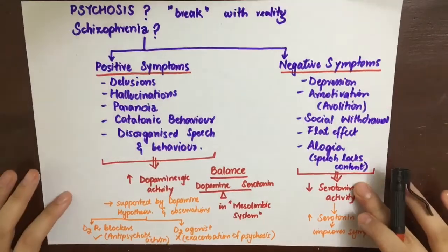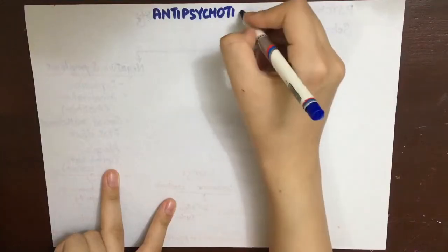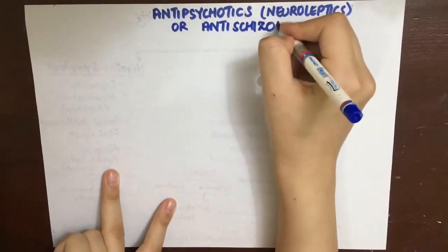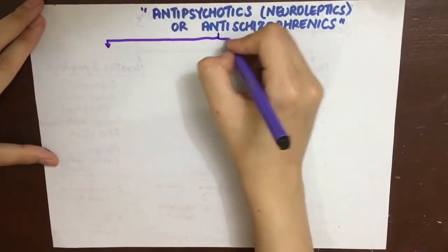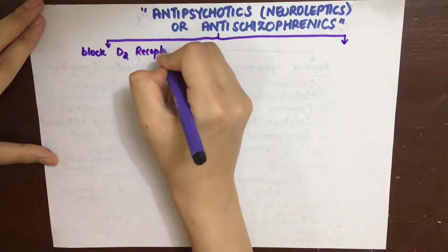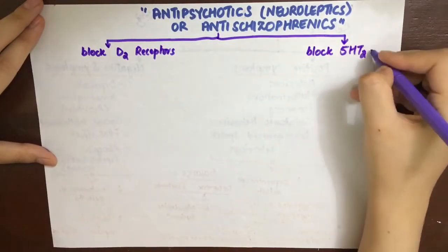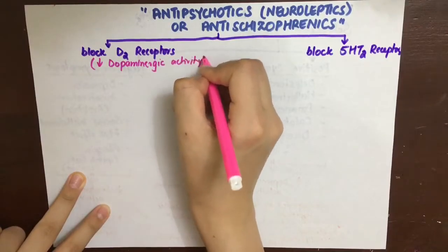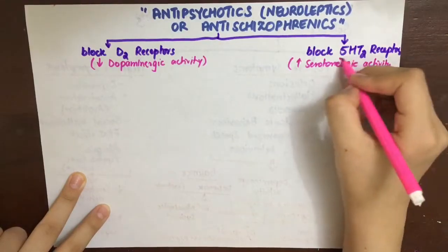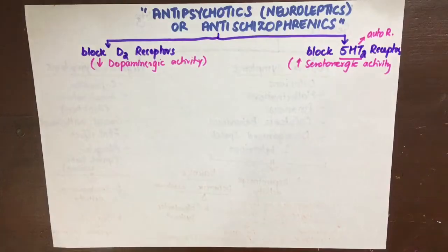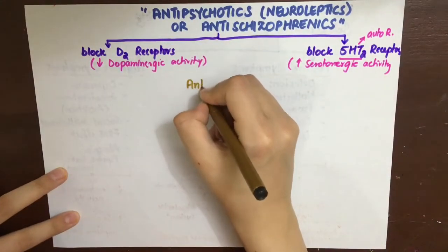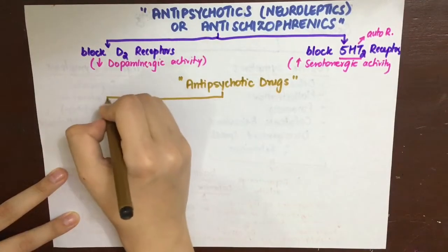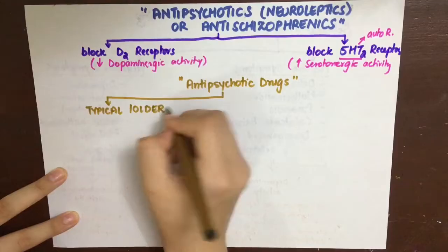Now let's see what antipsychotic, or antischizophrenic, or neuroleptic drugs do to reduce the positive and negative symptoms of schizophrenia. Firstly, they act on increased dopaminergic activity by blocking D2 receptors to decrease this activity and show improvement in symptoms. Secondly, they can also block 5-HT2 receptors, which are autoreceptors on serotonin neurons; by inhibiting the autoreceptor there will be negative feedback and thus increased secretion of serotonin. Apart from these, they also have activity on muscarinic, histamine, and alpha blockade.